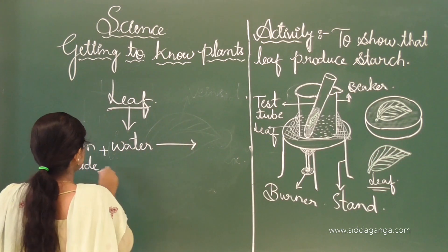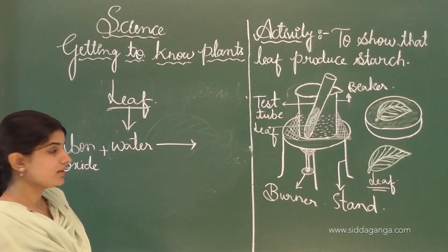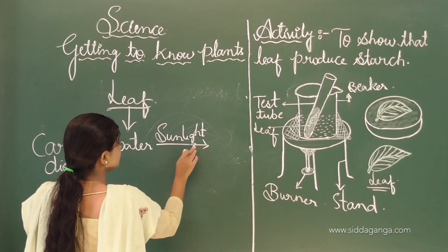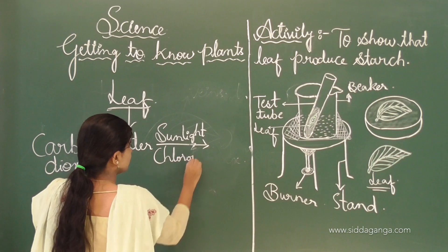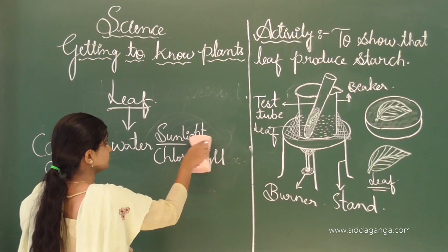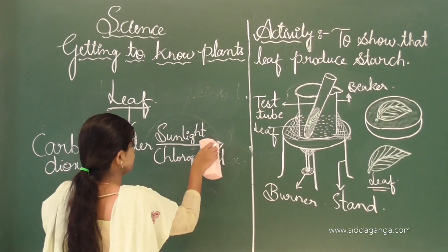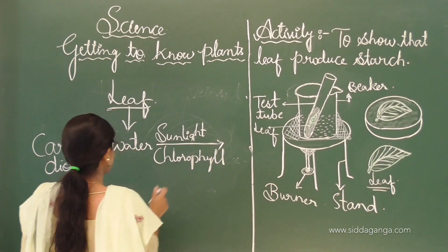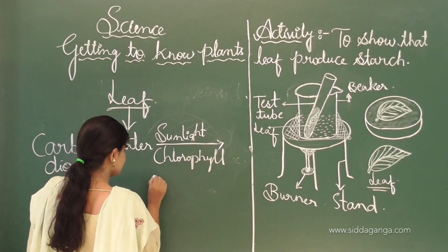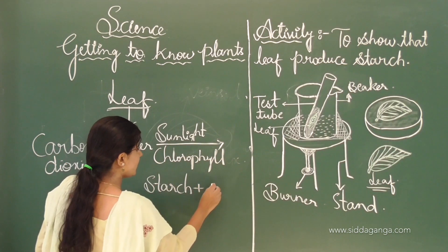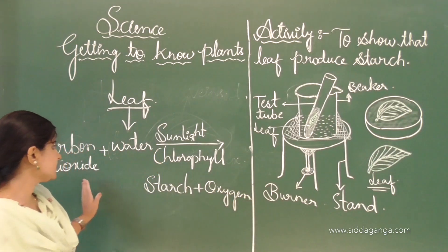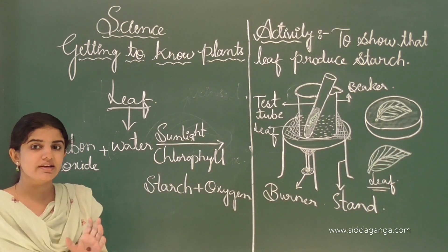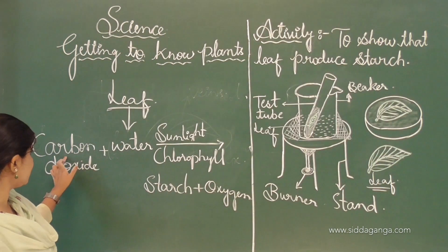Carbon dioxide and water are the simple substances utilized by the plant — the leaf. In the presence of sunlight as well as the chlorophyll pigment, plants will prepare starch — nothing but food — and oxygen. This is the definition of photosynthesis: the food-preparing process which takes place in the leaf. That is why the leaf is called the kitchen factory of the plant. By using carbon dioxide and water, plants produce starch and release oxygen.